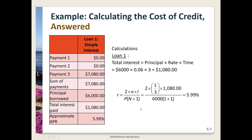To get the APR for Scott's first loan, we plug into the formula: 2 × (1/3) — since n is one payment per year over three years — × $1,080 interest, divided by $6,000 principal × (1 + 1). When calculated, this gives an APR of approximately 5.99 percent.